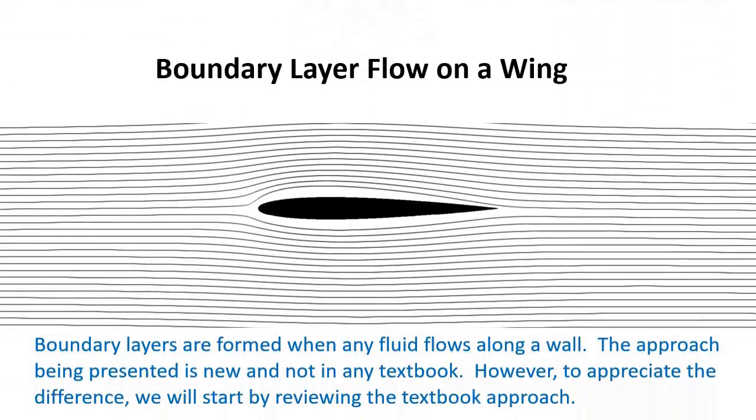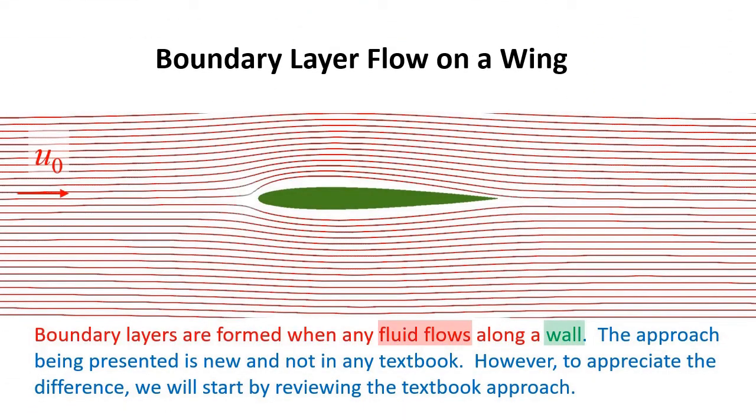Boundary layers are formed when any fluid flows along a wall. The fluid velocity at the solid surface is reduced to zero due to friction. The velocity increases as you move away from the surface until you again reach the free stream velocity. This slow moving layer near the wall surface is called the boundary layer. The question is, what does the boundary layer look like on a wing?